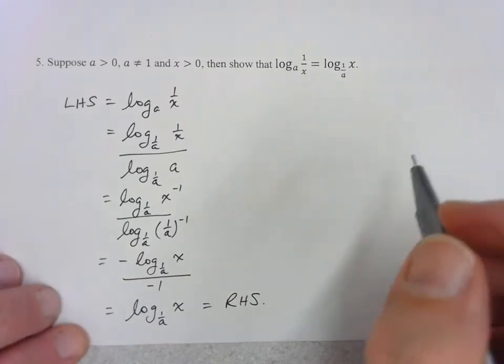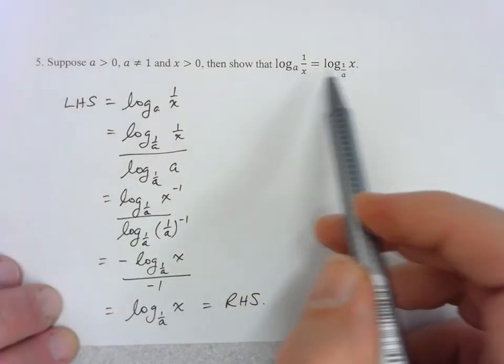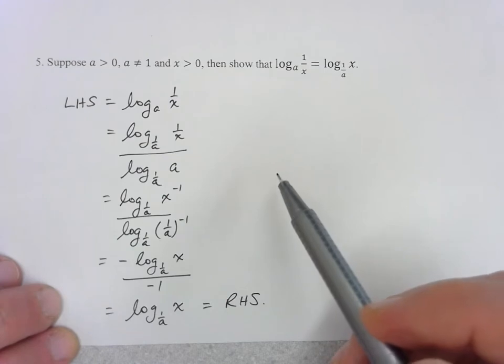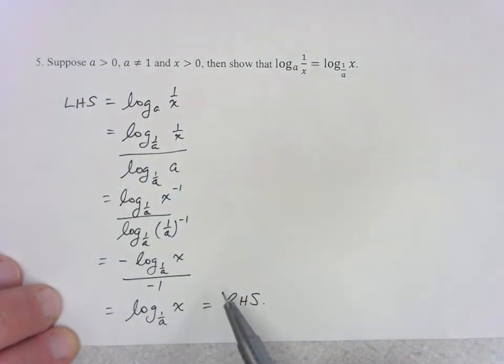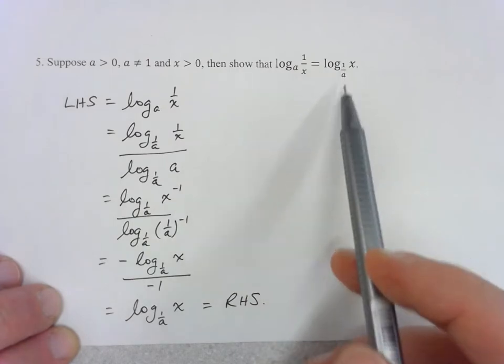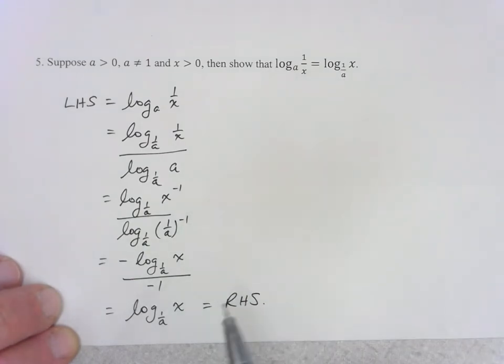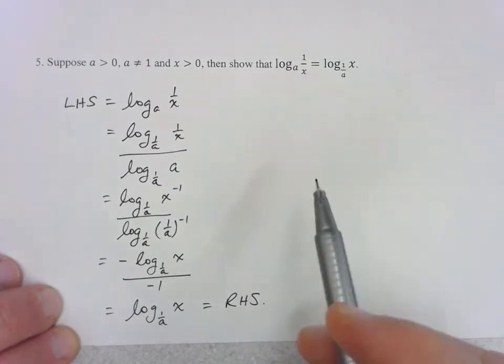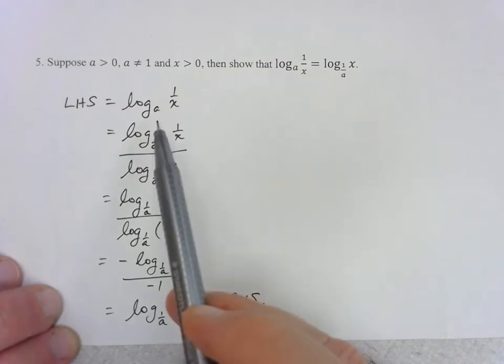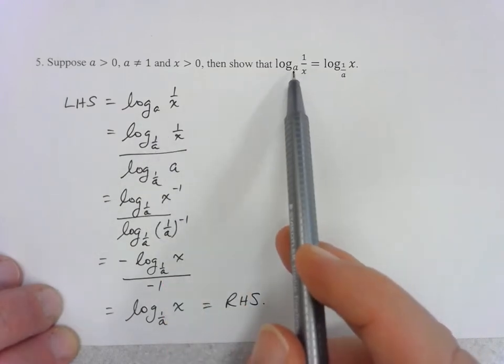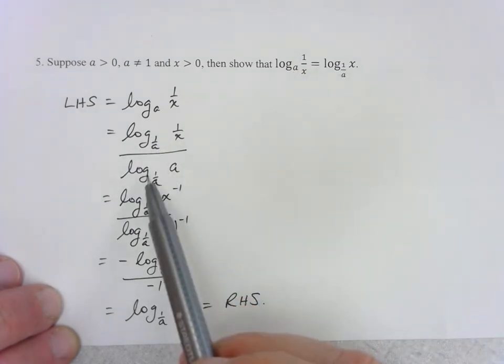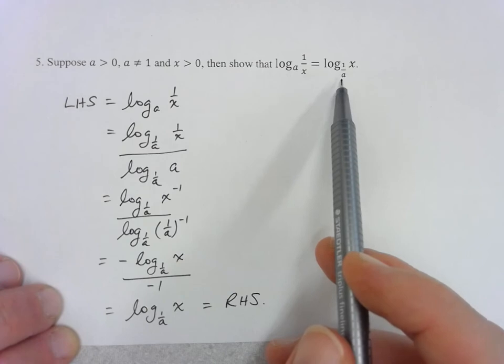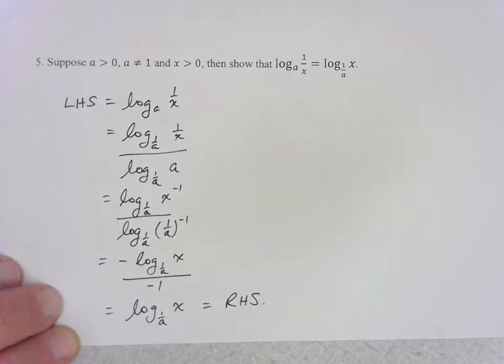Similar to these proofs where we're trying to show that two sides of an equation are equivalent, we start with one side and manipulate it until we get to the other side. Sometimes you have to work with each side independently and eventually get to the same thing. But again, a useful trick is doing a change of base. I had base a on one side, base 1/a on the other side, so I used the change of base formula to eventually get to the right-hand side of the equation. That's it for this one.